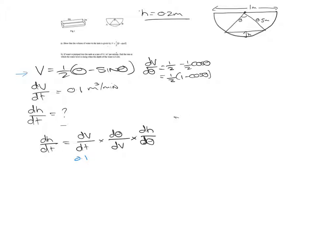However, we don't want dV by dTheta. We want dTheta by dV. So this is going to become 1 over a half, 1 minus cos theta.